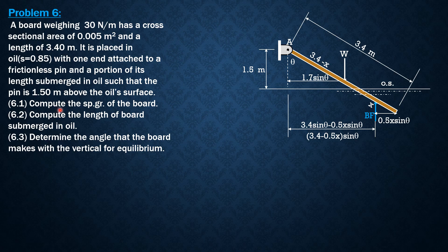For the first question, compute the specific gravity of the board. We can compute the weight of the board because its uniform weight is given, 30 newtons per meter, and its length is given also. From the weight, we equate it to specific gravity of the board times specific weight of water times the volume of the board. The weight is 30 newtons per meter times 3.4 meters, so that would be 102 newtons.